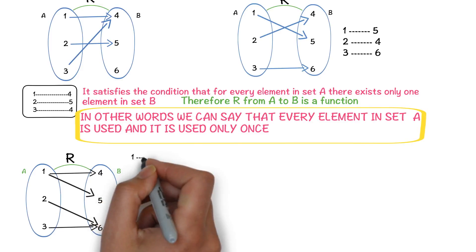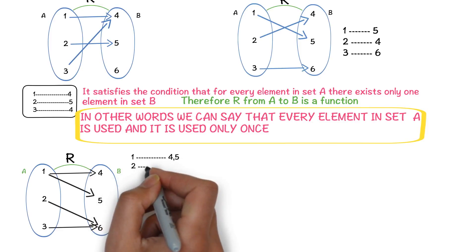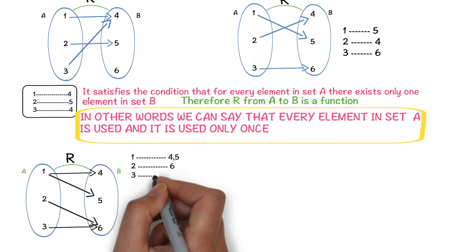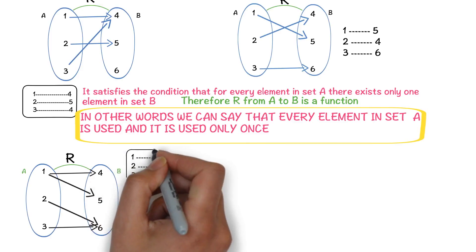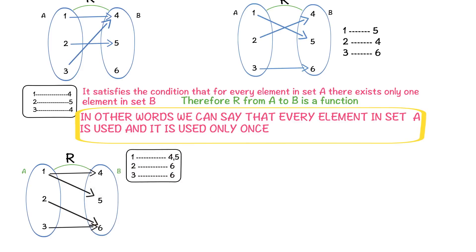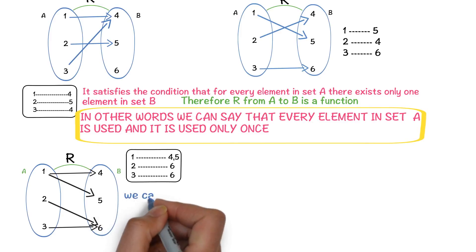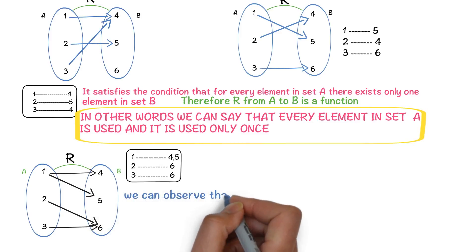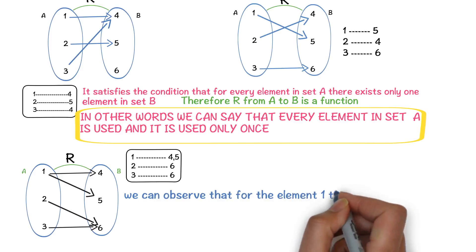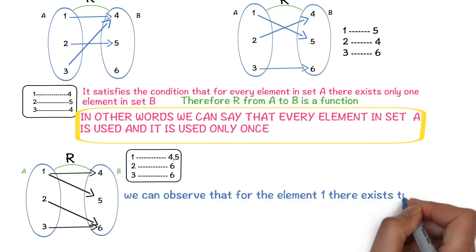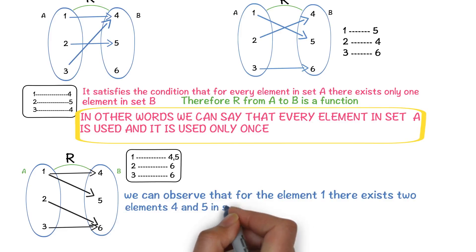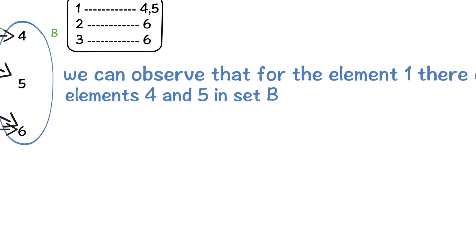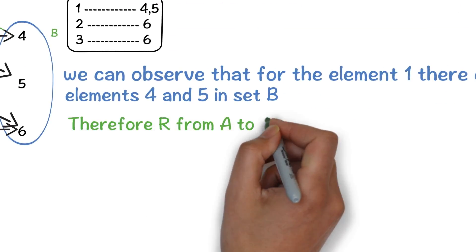Observe that for the element 1, there exist 2 elements — 4 and 5 — in set B. For the element 2, there exists only one element. For the element 3, there exists only one element, 6. We can observe that for the element 1 in set A, there exist 2 elements, 4 and 5, in set B. So uniqueness fails. Therefore, R from A to B is not a function.